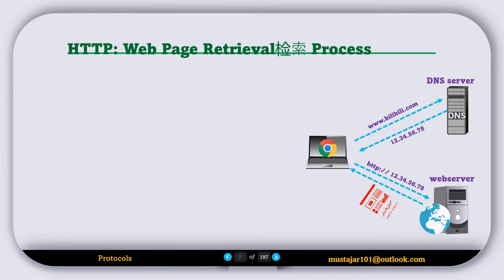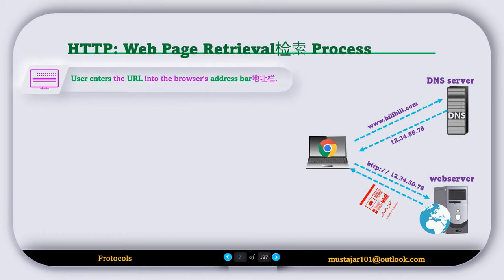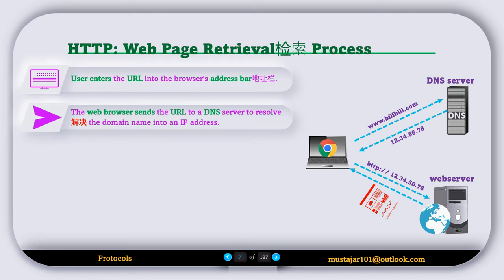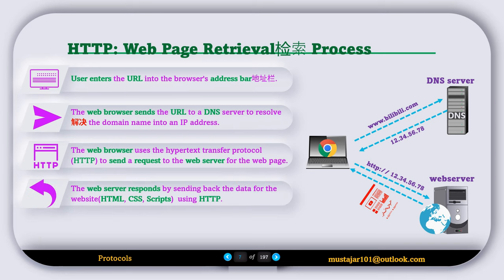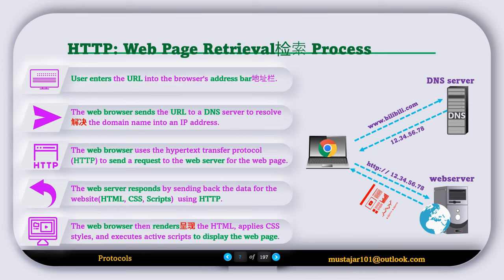Let's understand the HTTP web page retrieval process. First, the user enters the URL into the browser's address bar. The browser sends the URL to a DNS server to resolve the domain name into an IP address. The browser then uses HTTP to send a request to the web server for the web page. The server responds by sending back the data — including HTML, CSS, and active scripts — and the browser renders and displays the web page.